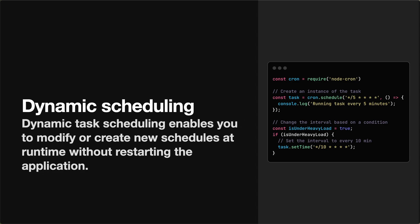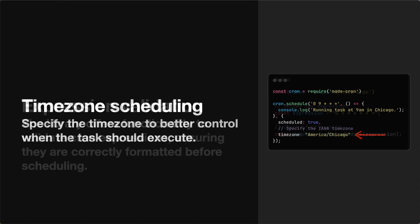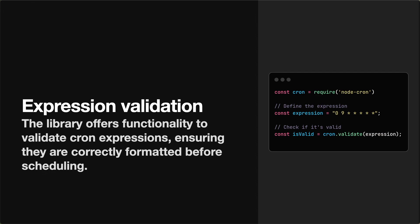Building on task management is dynamic scheduling, where you can change the interval based on different criteria within your application. For example, you can define a variable `isUnderHeavyLoad` that theoretically tracks server load. If this value is set to true, you can use `task.setTime` passing in a completely different interval, allowing Node-Cron to change the execution interval. It's also important to understand that Node-Cron executes jobs based on the server's current time; however, you can pass in a `timezone` parameter to tell Node-Cron to execute the task in the specified time zone. Finally, we have expression validation — a simple utility where you define an expression in a variable and pass it into `cron.validate`, which returns true or false depending on whether the cron expression is valid.